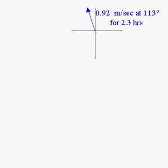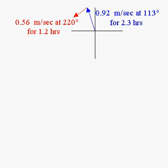In this example, we have an explorer following directions on a map. The explorer starts walking with a speed of 0.92 meters per second at a direction of 113 degrees, and she does that for 2.3 hours. She then stops and changes direction, heading at 220 degrees with a speed of 0.56 meters per second for 1.2 hours.